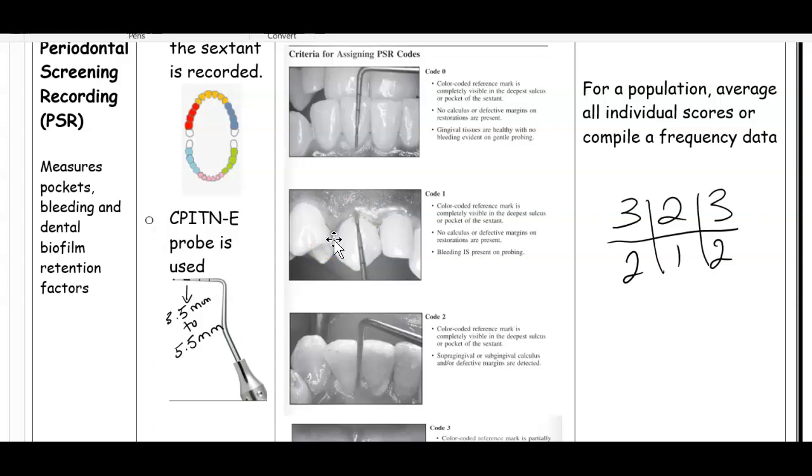If there is bleeding but no calculus, the bleeding must be there because of plaque. You give this sextant a score of one. I would put a one here if there was no calculus, no defective margins, but bleeding.